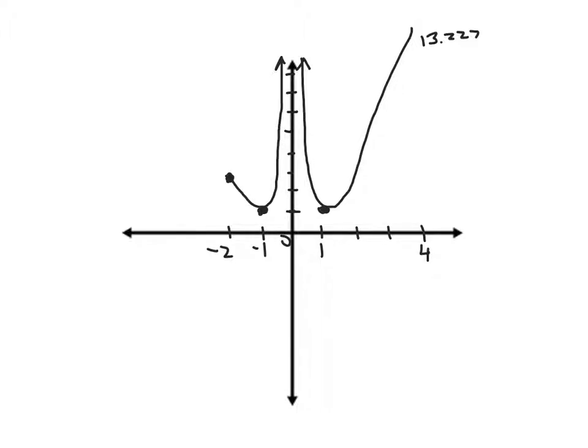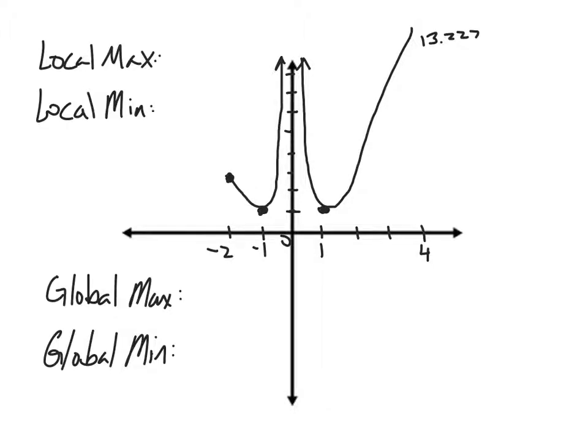So, looking at our overall graph to identify local maximums, minimums, and global maximums and minimums. We can see that overall we have these two lowest points here at x equals negative 1 and positive 1. Those are going to be our global minimums. When x is positive or negative 1. There is no local minimum because our only two minimum values are going to be those global minimums. So for local minimum, we can write none.